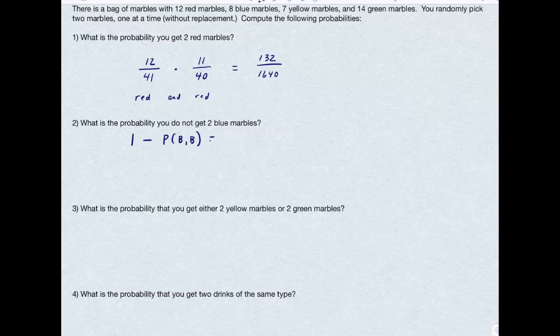So in this case, I'm going to have 1 minus, and again I'll have 41 marbles. For the first time I pick a marble, I have eight blue marbles to choose from. The second time, I'm going to only have seven marbles left. And again, there's only 40 marbles left in the bag. I'm going to take that fraction and subtract it from 1.